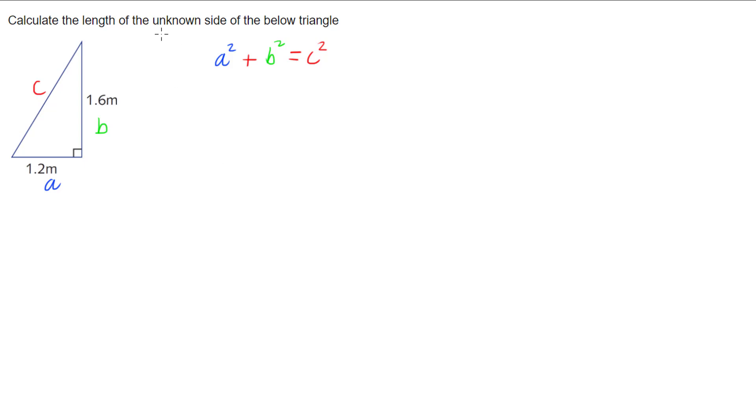So let's put in A. A is 1.2 meters, so we're going to have 1.2 squared. Adding on B, which is 1.6 meters, so 1.6 squared, and that gives us C squared.